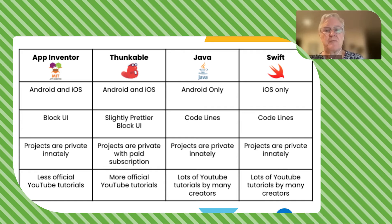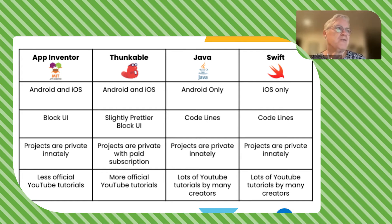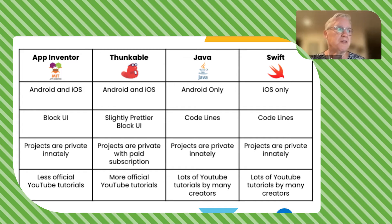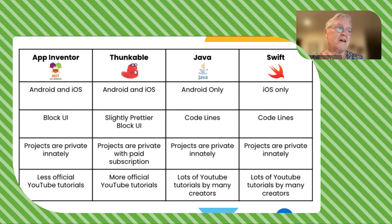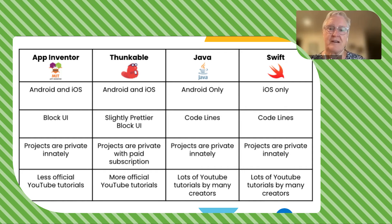App Inventor and Funkable, at this point, can both be used for Android and iOS — so you can use them on Android phones as well as iPhones. They each have their positives and negatives, and they differ in the amount of resources available. App Inventor probably has fewer official tutorials online, while Funkable has a lot on their website along with a growing community.